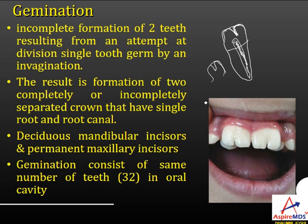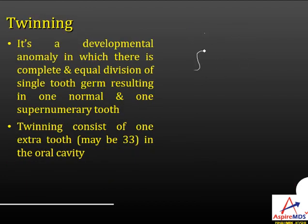Gemination is usually seen in deciduous mandibular incisors and permanent maxillary incisors. Since complete separation has not taken place, the number of teeth in the oral cavity remains the same. In twinning, during development there is complete invagination from the bud, so two separate teeth develop from a single tooth bud — this is twinning.